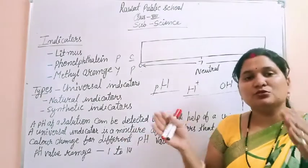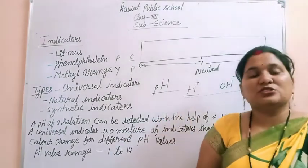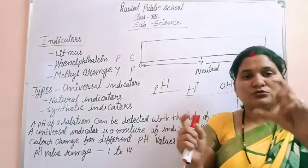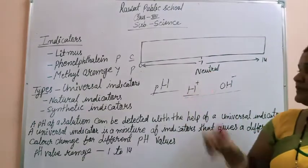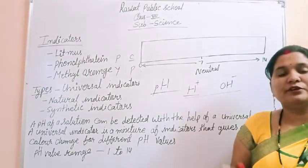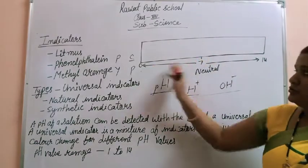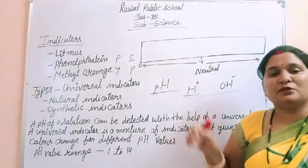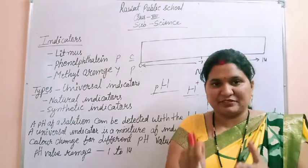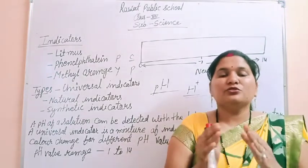The pH value range is from 1 to 14. Here we have the pH scale where the pH value is detected according to color. If the pH value is 7, it means the solution is neutral. A pH value of 7 indicates a neutral solution.